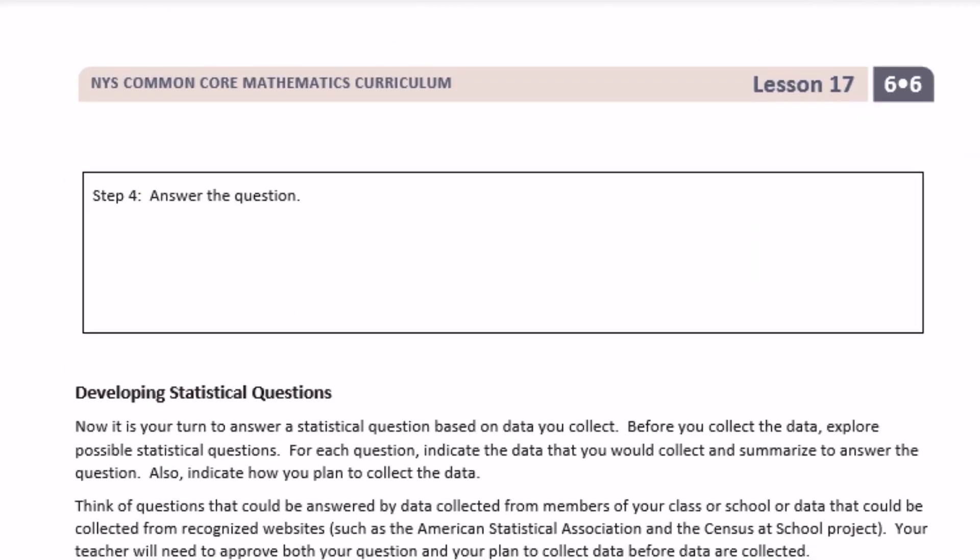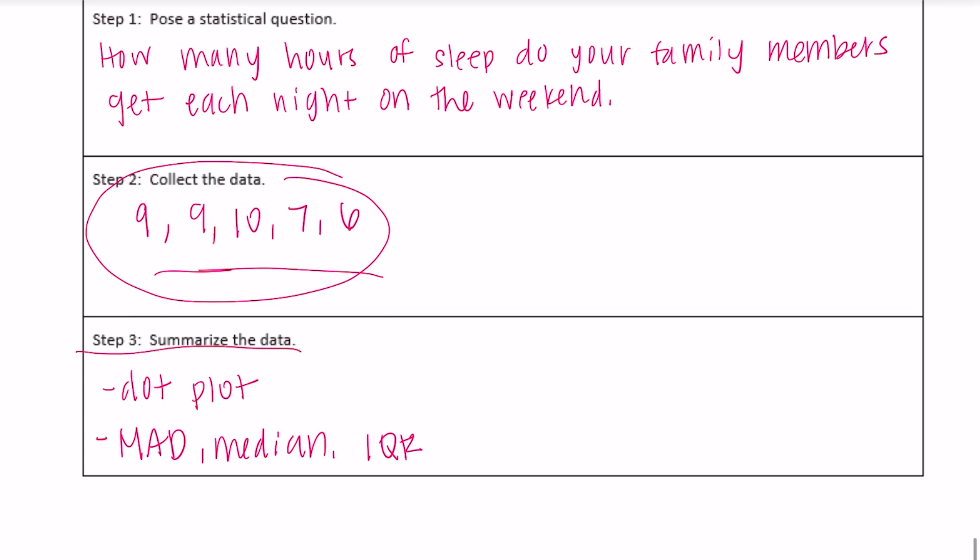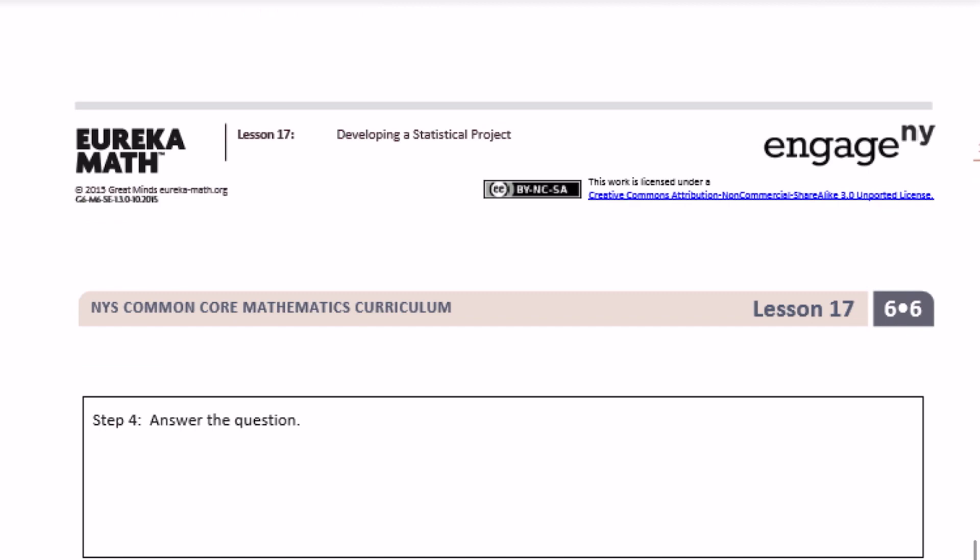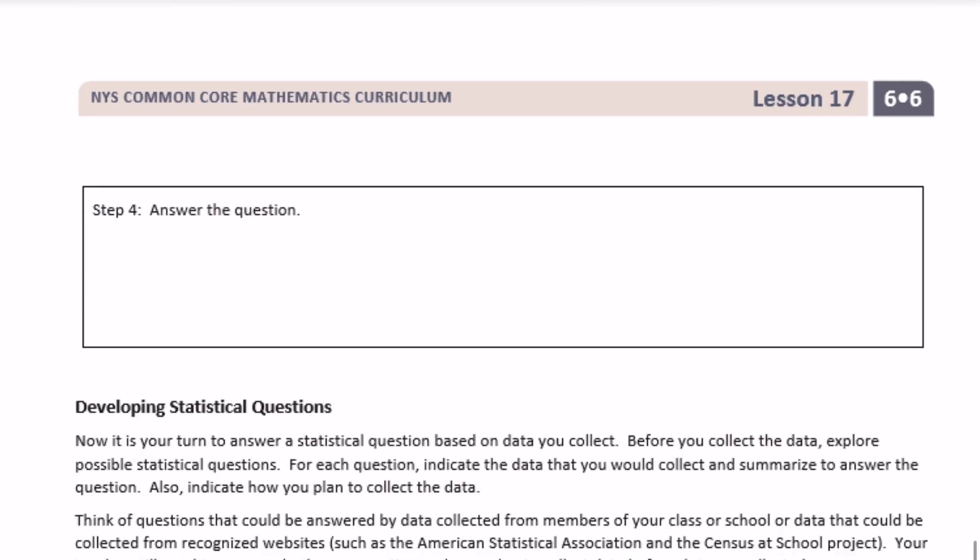So step 4 says to answer the question. This is when you go back and you look at what you've summarized from the data, what your question is, and go ahead and answer it. So what is the average amount of sleep that your family members get each night? Maybe it was like 8 and a half hours, and so you can explain what you can see from the data and say from the data a typical family member of mine gets about blah blah blah number of hours of sleep on a weekend. And you can say because this is the mean, here's the MAD, so there's maybe not a lot of variability, but just kind of explain and answer your own question.